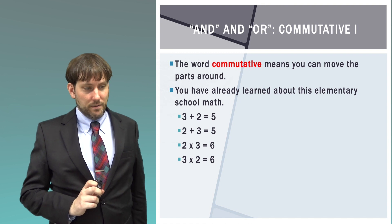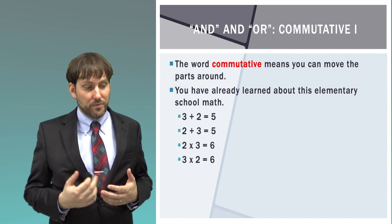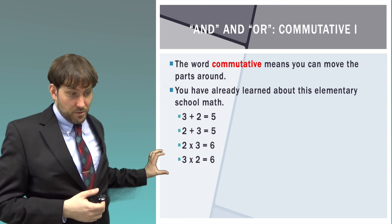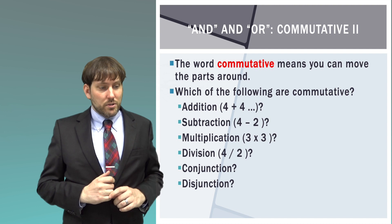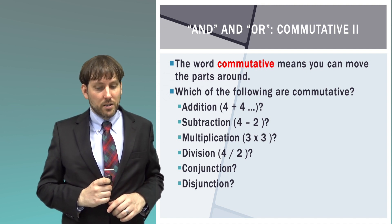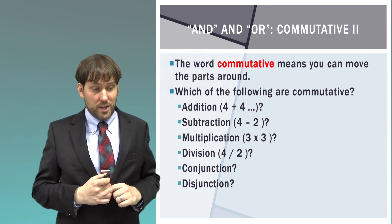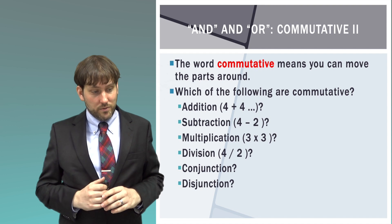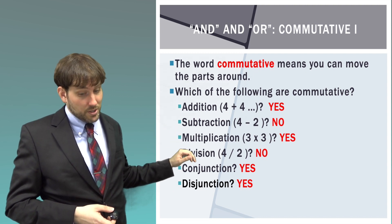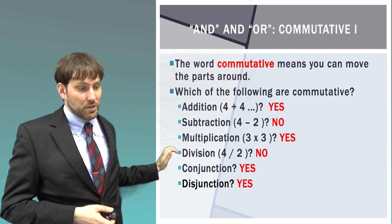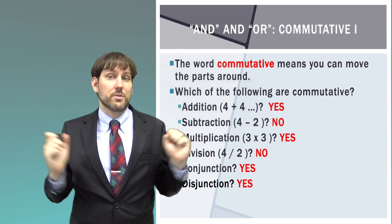And and or are commutative. You learned the concept of commutative when you learned math — 3 plus 2 is 5, 2 plus 3 is 5, same meaning. 2 times 3 is 6, 3 times 2 is 6. You can switch the order and it doesn't change the value. Addition is commutative. Subtraction is not. Multiplication is. Division is not. Conjunction and disjunction are commutative. This means it doesn't matter which one is on the left or the right — you can switch them and the answer will still be the same. A conditional, on the other hand, is not commutative.